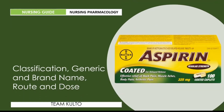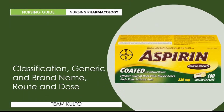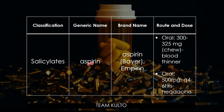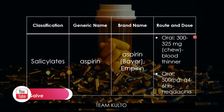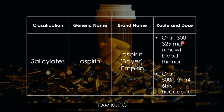Let's begin with classification, generic and brand name, and route and dose. Aspirin belongs to the drug class salicylates. The generic name is aspirin. Two brand names: Bayer and Ampirin. The route is oral only, but there are two different doses.